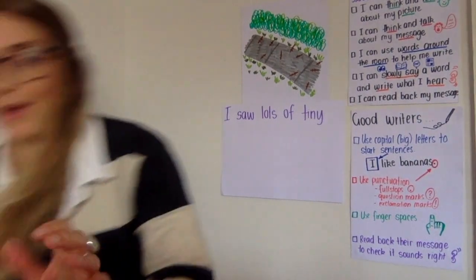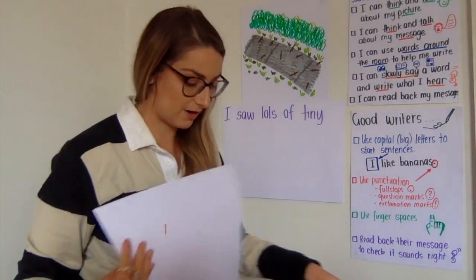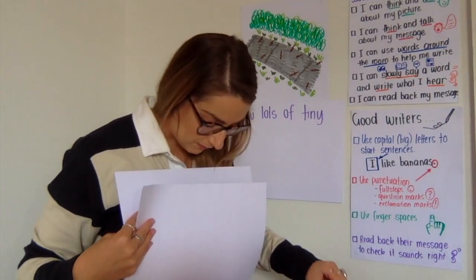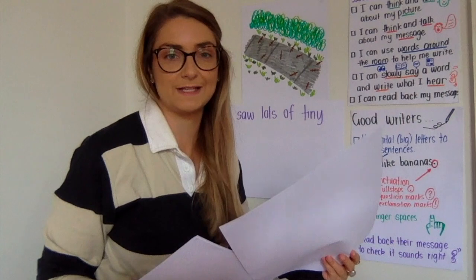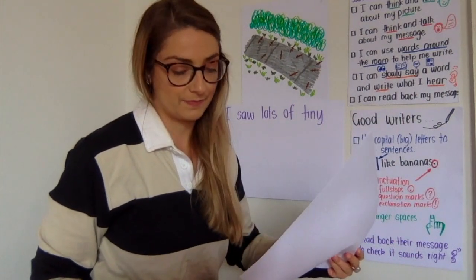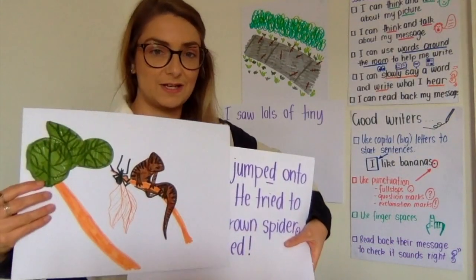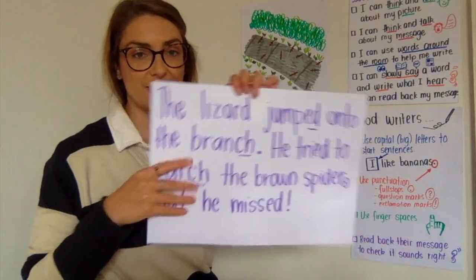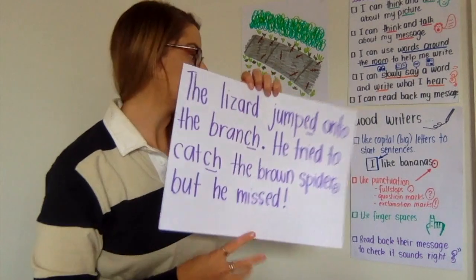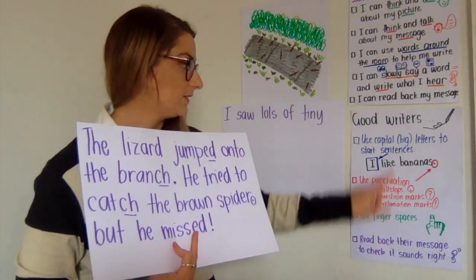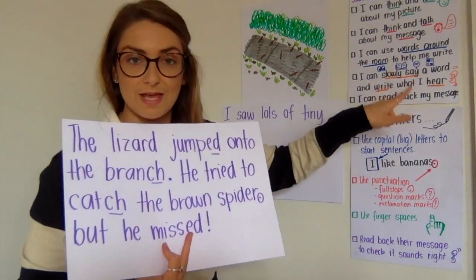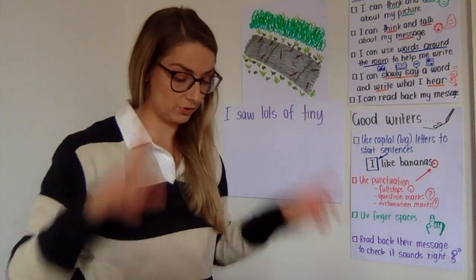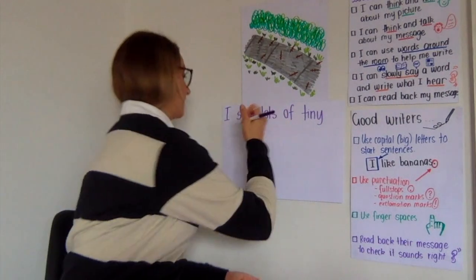Now I'm going to look back through my writing that I've written over the time because I know that I've written about lizards before. Oh, there it is. So I have my picture of the lizard who was trying to eat the spider and I can see the word 'lizards'. That's what good writers do — they borrow words from around the room or where they can see them. So I'm going to borrow the word 'lizard' and take a picture of it.